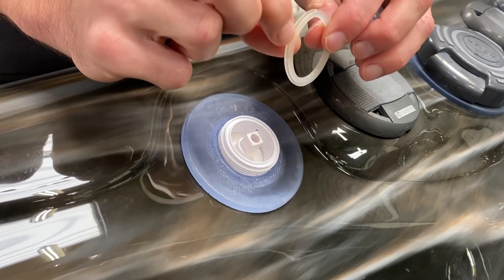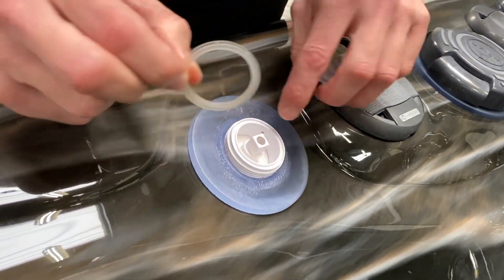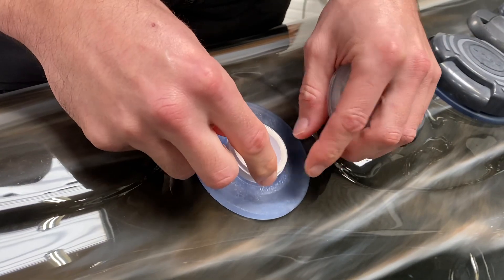This seal has actually got a little ridge on it, so the little ridge just sits in the groove there. So we'll put that on next.